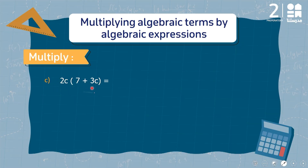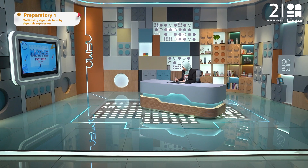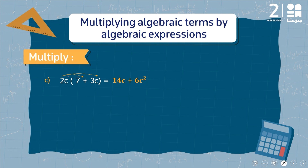Another example: I want to distribute 2c on the bracket. I'll multiply 2c by 7 and then 2c by 3c. 2c times 7 is 14c, and 2c times 3c is 6c squared. Don't forget that c is power 1 and c is power 1, and in multiplication we add the powers — that is where c squared comes from.